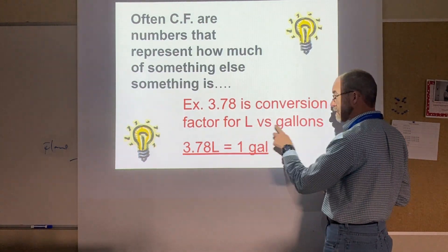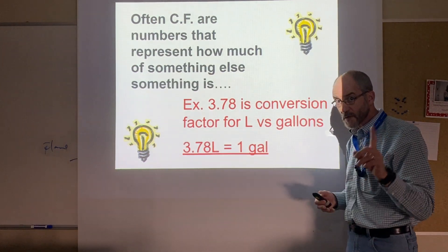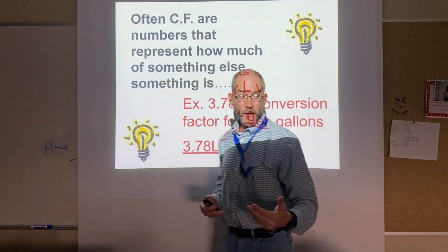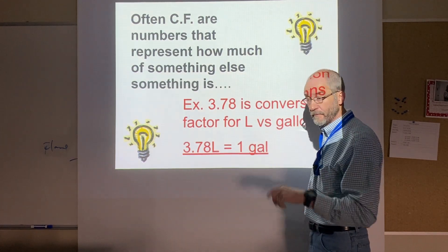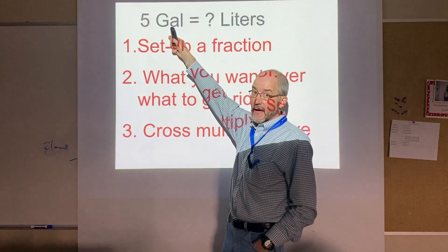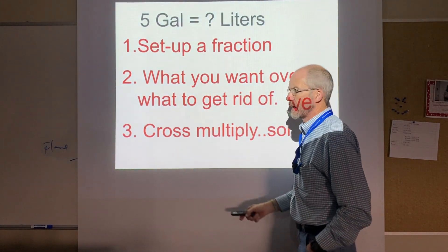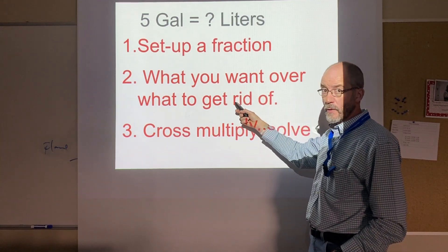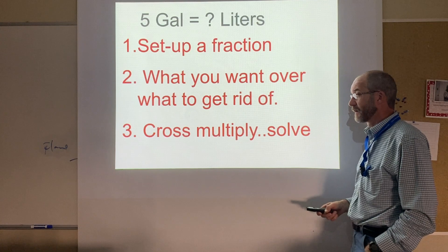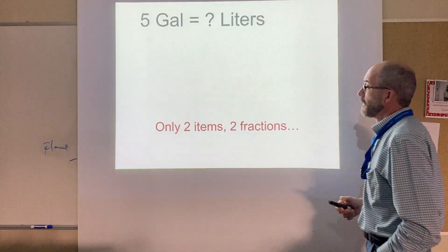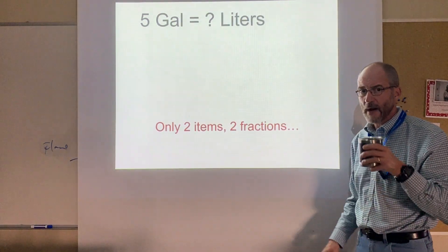Let's start with a simple example: it takes 3.78 liters to make one gallon — just accept that conversion. I already know Avogadro's number is 6.02 times 10 to the 23rd, so there are no secrets. If I have five gallons but want to know how many liters, I'm going to set up a fraction. I'm always going to put what I want over what I want to get rid of in terms of units, then cross multiply and solve.